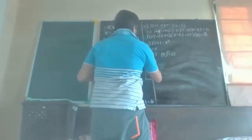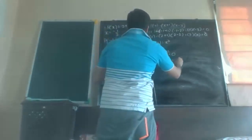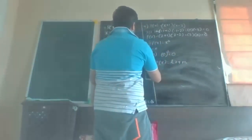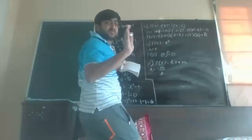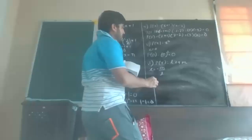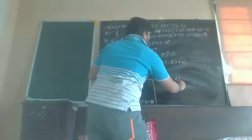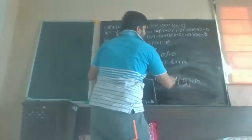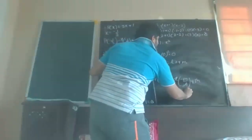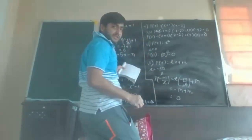Sum number six: p(x) = lx + m, and x is given as minus m upon l. So p(−m/l) = l into (−m/l) + m. L gets cancelled, giving −m + m = 0. So yes, it is also a zero of the polynomial.